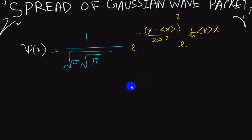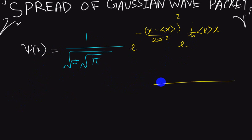Hello guys, this is Ixty again. In the last video, I normalized the wave function. In this video, I am going to find the uncertainty of this wave function — that is, if this wave is spread like this, then what is the uncertainty in the x direction? I am going to find that.